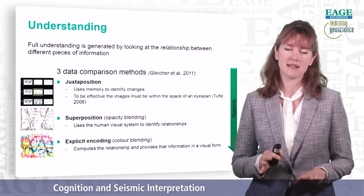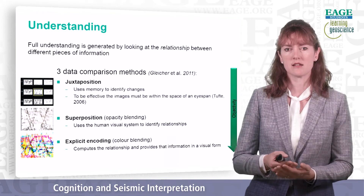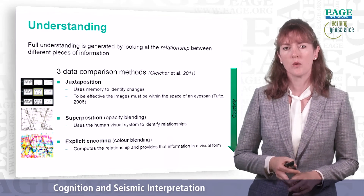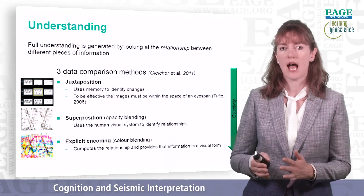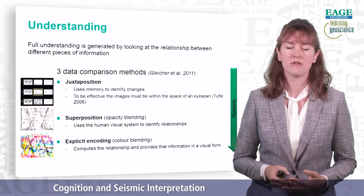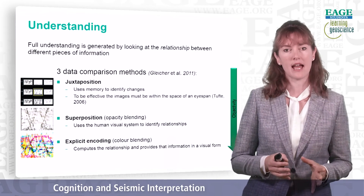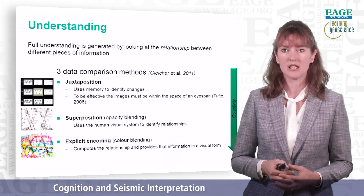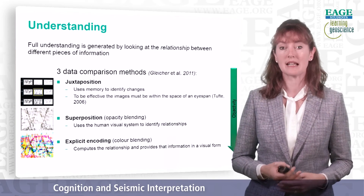With juxtaposition, we see data side by side and can look at the differences between them. We can also put images one on top of the other and move between them in time. When we do this, we're using the visual system and memory to identify the changes. But to be effective, the images must all be within the space of an eye span, because if you have to look away and come back, that uses higher cognitive functions of recall, which is much more cognitively harder to achieve.